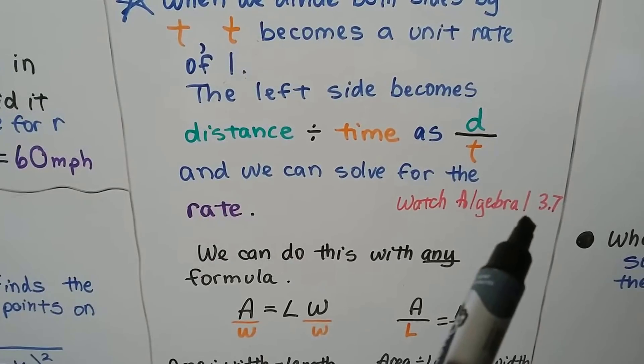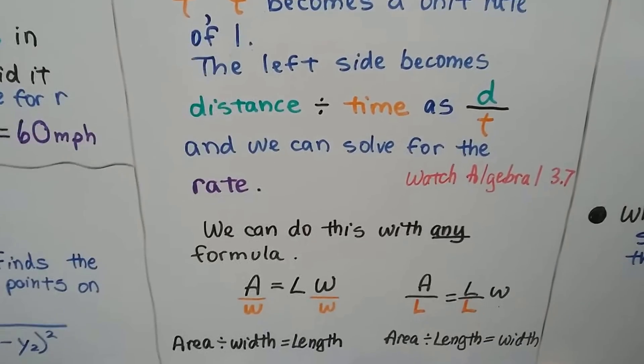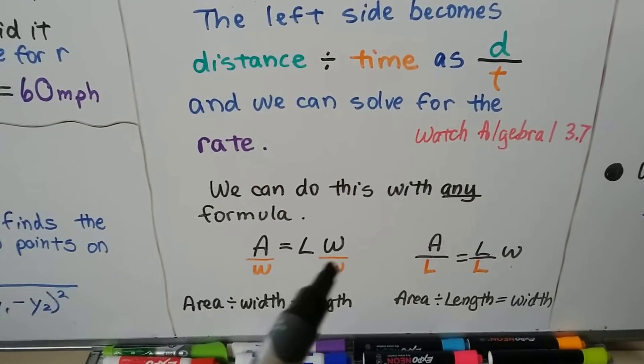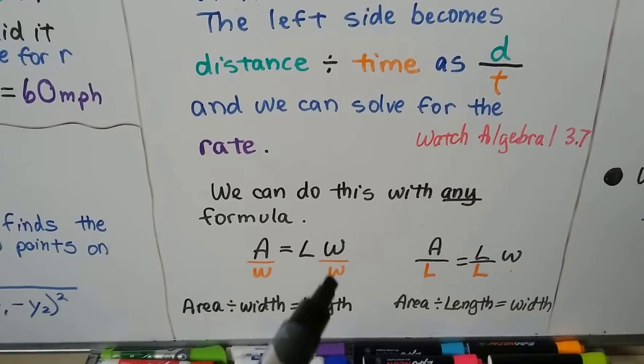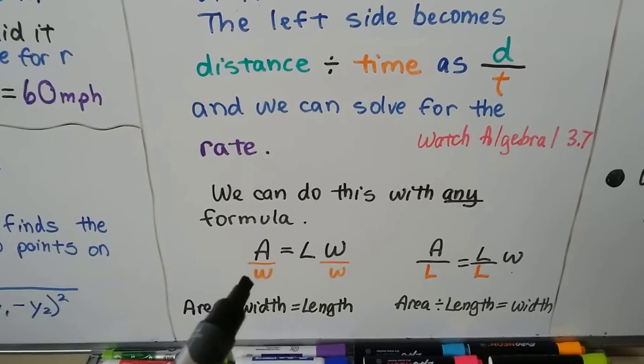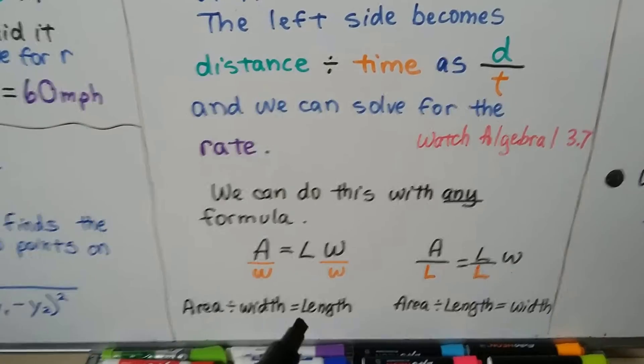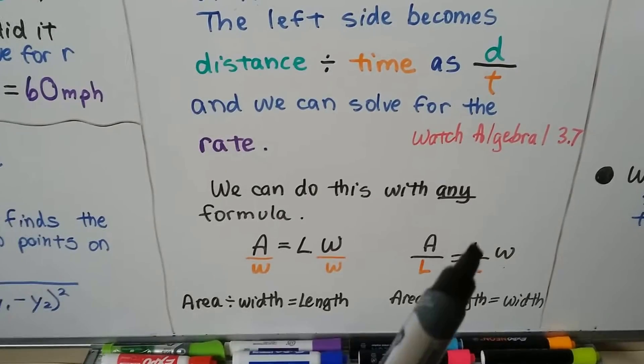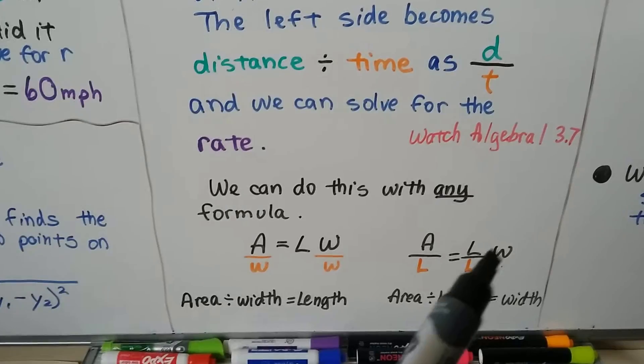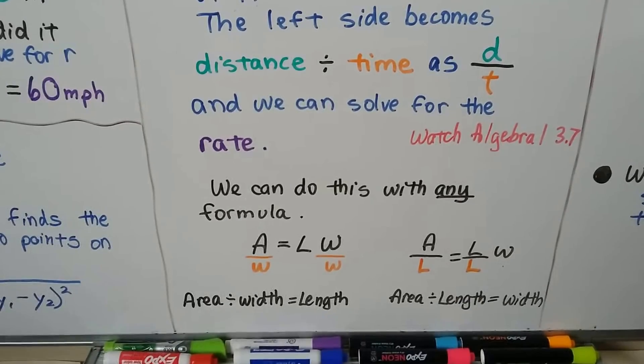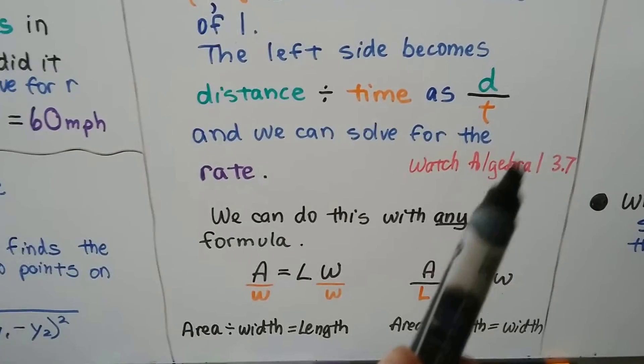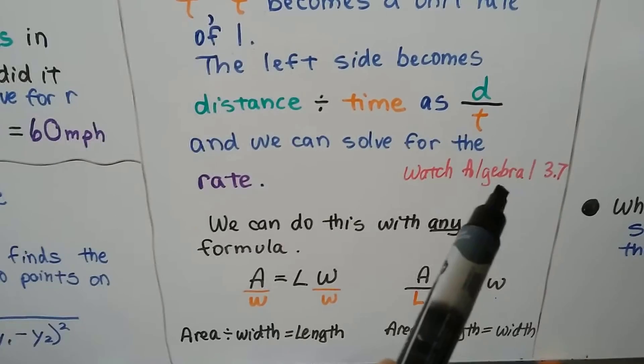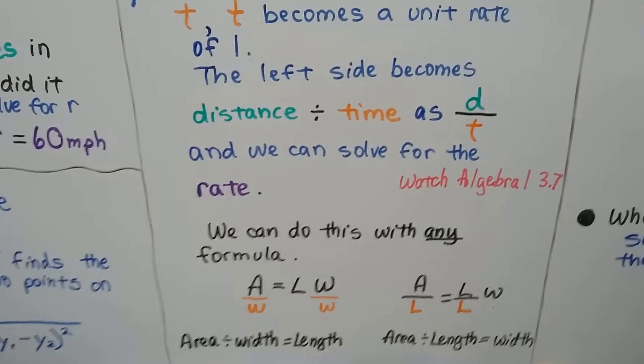Now, you can watch my Algebra 1 video 3.7. I highly advise you to do that. And we can do this with any formula. We know area equals length times width. We could divide both sides of this formula by the width, turn that into a giant 1. So now we just have 1L, but it's area divided by width. So the area divided by the width is going to equal the length. We can also divide both sides by the L, by the length, and turn that into a giant 1. So we have 1W on this side. And area divided by length equals width. And this video explains switching these formulas around, and you may need to do it on the test. So, it's very important you watch 3.7. Just click on the description, and you'll see the link to Algebra 1 3.7.